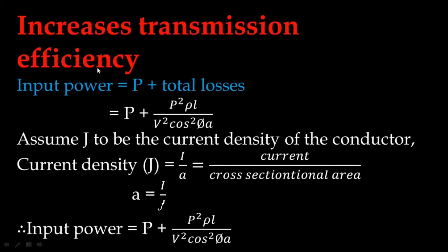So, this is our equation. The second one is the transmission efficiency. The first is input power. Input power is P plus total losses. Total losses are given by: P squared times Rho times L, divided by V squared times cosine squared phi times A. Total losses = P²ρL / (V² cos²φ · A).